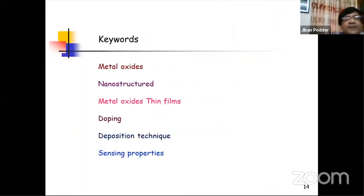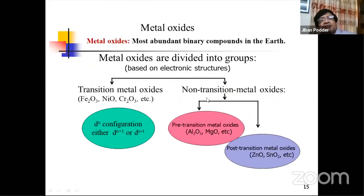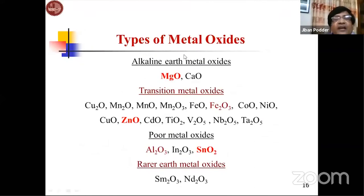The key words for the presentation are: metal oxides, nanostructured metal oxides, thin films, doping, deposition technique, and sensing properties. Metal oxides are abundantly available on earth. There are two main groups: transition metal oxides and non-transition metal oxides. Non-transition metal oxides are divided into pre-transition and post-transition groups, including aluminum oxide, magnesium oxide, zinc oxide, tin oxide, nickel oxide, ferric oxide, and chromium oxide. There are also alkaline earth metal oxides, poor metal oxides, and rare earth metal oxides.